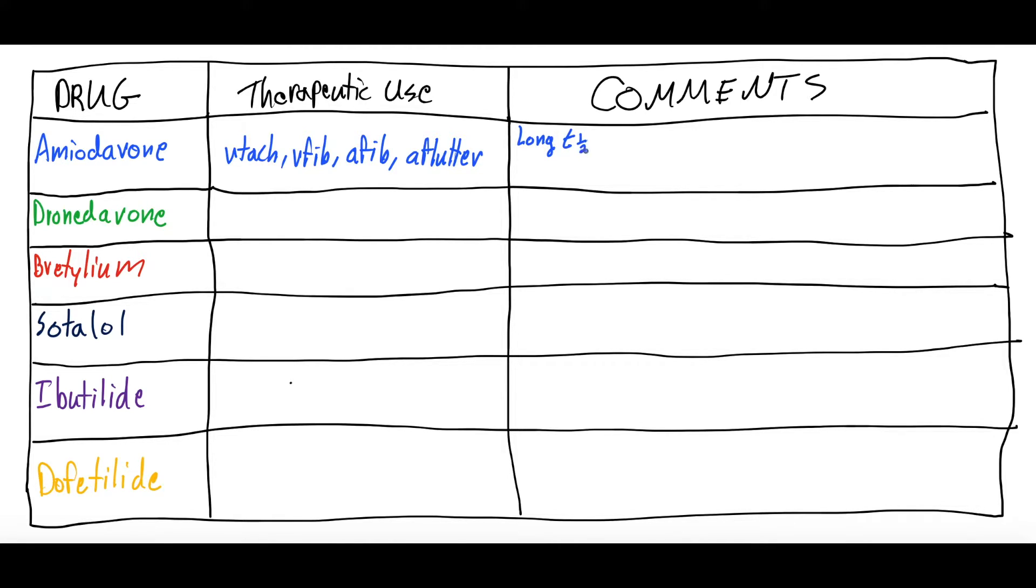The comments that we would say for Amiodarone is that it has a very long half-life. So, half-life from 25 to 60 days. Extremely long. It also has, believe it or not, Class 1 antiarrhythmic, which is sodium channel blockade, Class 2 antiarrhythmic, which is beta blockade, Class 3, which we're talking about right now, which is potassium blockade, and then also Class 4, which is calcium channel blockade. It has Class 1, 2, 3, and 4 actions. So, we talk about it as a Class 3 potassium channel blocker, but it actually has actions for all of them. Because of this, it decreases the velocity of the action potential, prolongs the refractory period, and is great for all those re-entry and tachycardia arrhythmias.